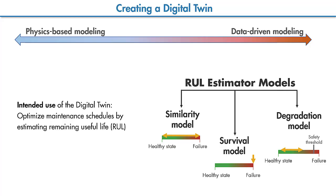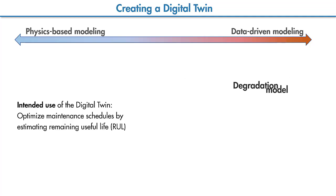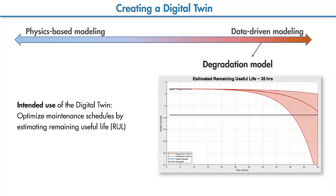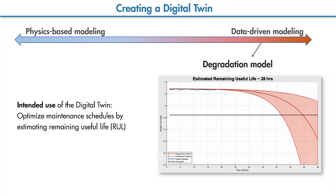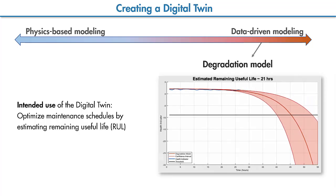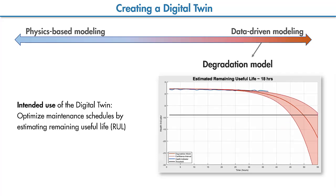For example, if we don't have complete histories from the fleet but know a safety threshold, then we can use a degradation model to estimate the remaining useful life of the pump. This degradation model is constantly updated using data from the pump measured by different sensors such as pressure, flow, and vibration.